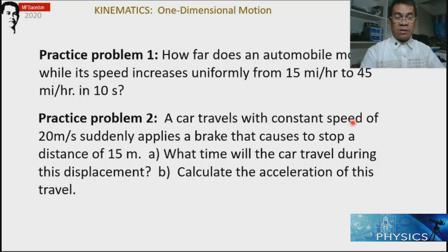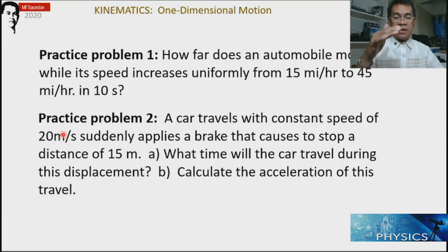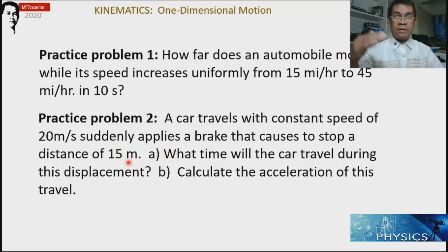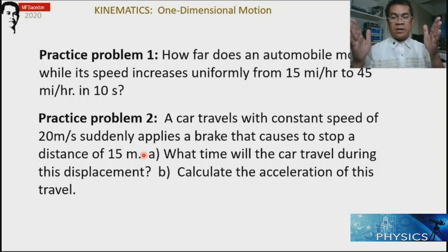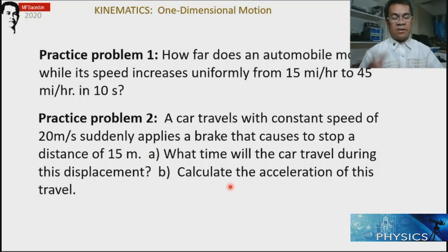For problem 2: a car traveling at a constant speed initially at 20 meters per second suddenly stops — meaning the final velocity is zero — over a distance of 15 meters after applying the brakes. Part (a): find the time traveled by the car during that displacement. Part (b): calculate the acceleration of this travel.